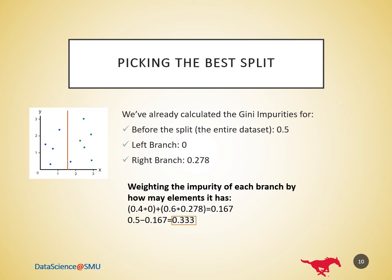The Gini gain is what's used to pick the best split in a decision tree. Higher Gini gain means a better split. For example, it's easy to verify that the Gini gain for the perfect split on our dataset is 0.5, which is more than 0.33.